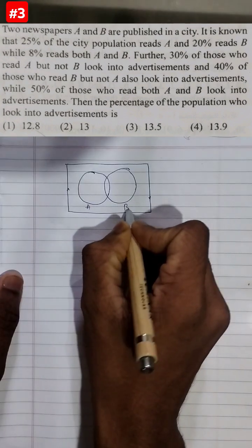For these kind of questions, it is very important to draw the Venn diagram for getting better understanding. This is A and this is B.